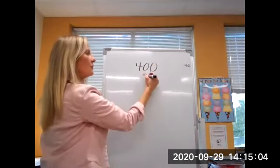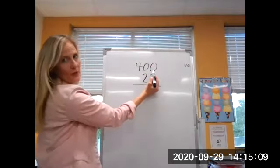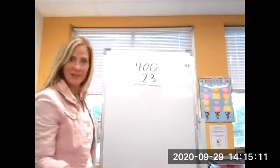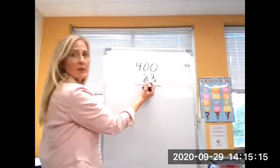So let's try 400 take away 23. Okay, so zero ones take away three ones. Can't do it. Go next door. Look for some tens. Well, there's no tens there.